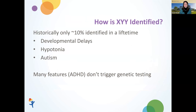How is XYY identified? A lot of what we know is based on individuals who were identified to have it, but that really only represents about 10% of all individuals with XYY. The majority of men with an extra Y chromosome go their entire lifetime without knowing they have it. More common indications for identifying the extra Y are genetic testing ordered due to global developmental delays, low muscle tone or hypotonia in infancy, or autism. Features like ADHD, more commonly seen in XYY patients, don't typically trigger genetic testing, so undiagnosed individuals may not be accurately reported in the literature.